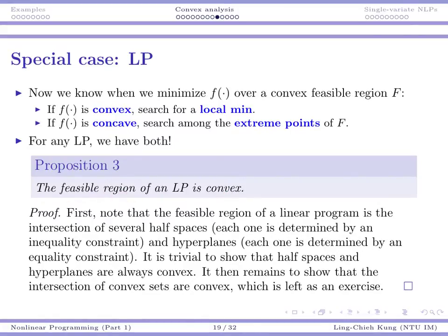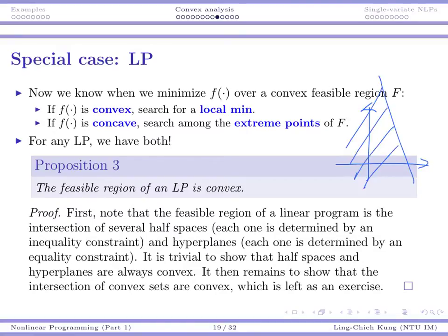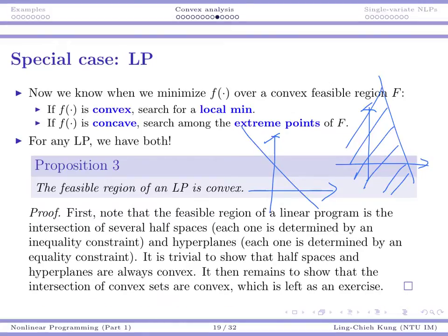First, we need to show that the feasible region of a linear program is convex. The feasible region of a linear program is the intersection of several half-spaces. A less-than-or-equal-to constraint gives a half-space region; an equality constraint gives a hyperplane. In multi-dimensional situations, we have either half-spaces or hyperplanes given by inequality or equality constraints. It is trivial to show that half-spaces and hyperplanes are always convex.